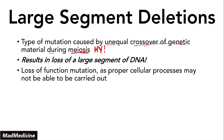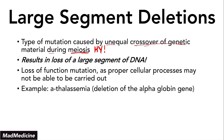An example of a large segment deletion is alpha thalassemia. In alpha thalassemia, you are deleting part of the alpha globin gene. When you delete part of the alpha globin gene, you will essentially lead down the pathway of developing alpha thalassemia. The more you delete, the worse the disease. Pretty straightforward.